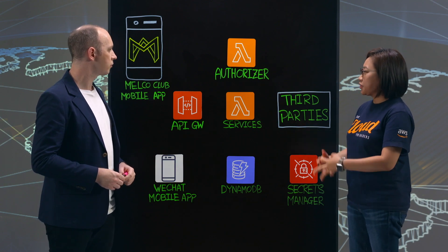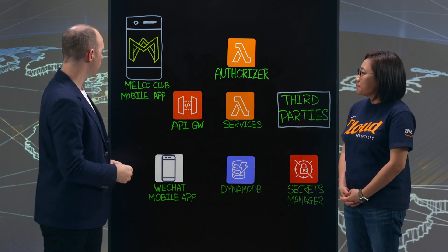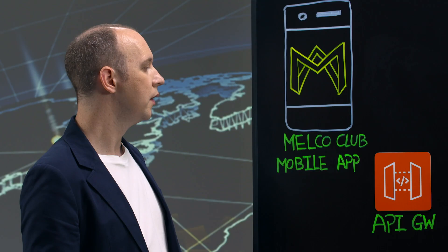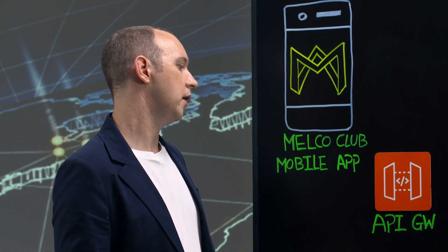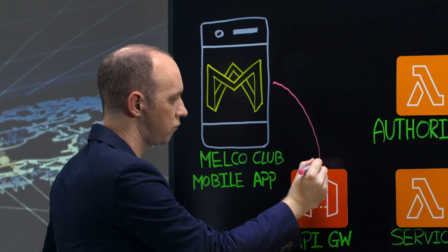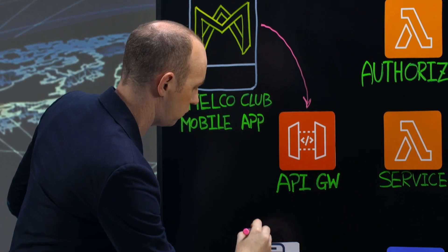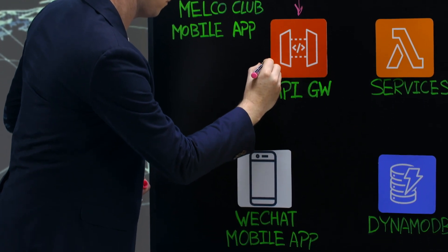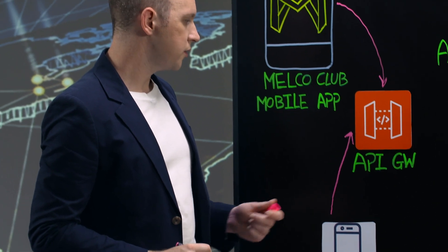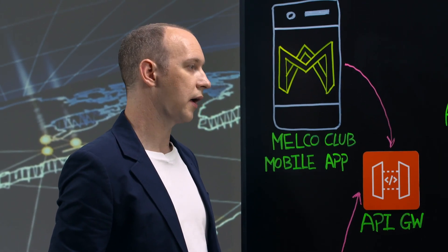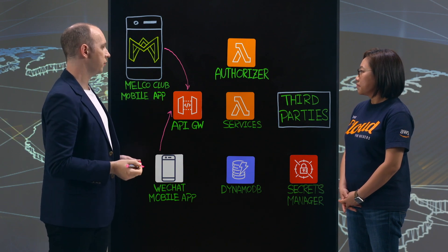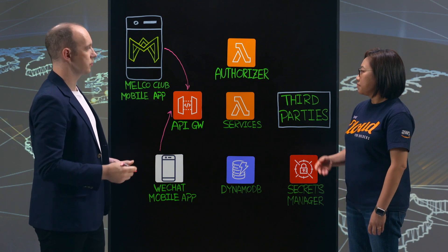Would you please show us the application flow? We have our iOS or Android application, Malco Club, and our WeChat mobile app. They both call an endpoint on API Gateway. Once the request has made it to API Gateway, the authorizer service, which is hosted in Lambda, is invoked for member-related services.